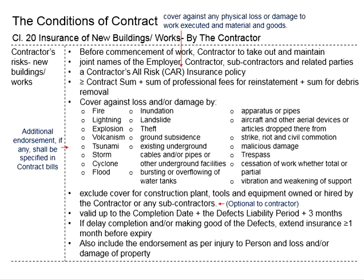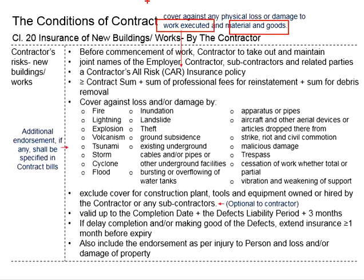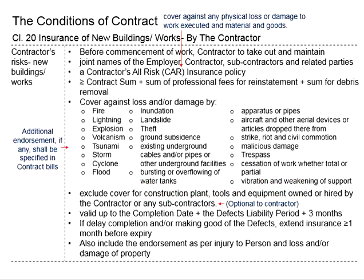The CAR insurance covers up to at least the contract sum to cater for the worst case scenario where the entire project is affected. The coverage typically excludes construction plant, tools, and equipment owned or hired by the contractor or any subcontractor. The main focus is to cover the works, materials, and goods related to the project — this is mandatory and the bare minimum. Coverage for construction plant, tools, and equipment is optional.